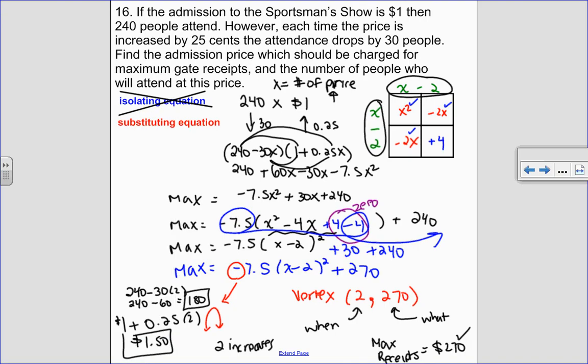So find the admission price which should be charged. So that admission should be charged is $1.50, and the number of people who will attend at this price is 180 people.